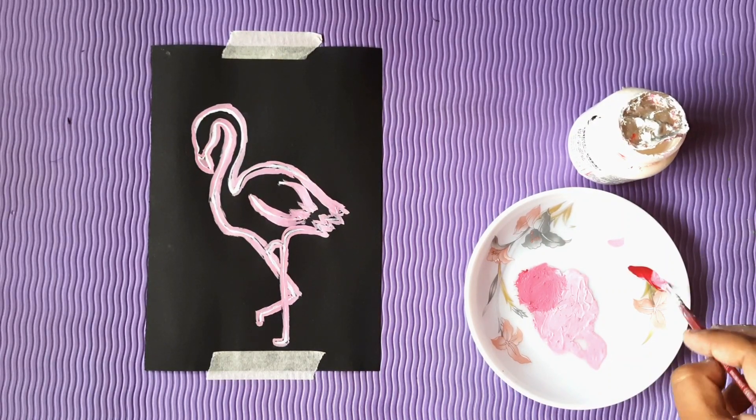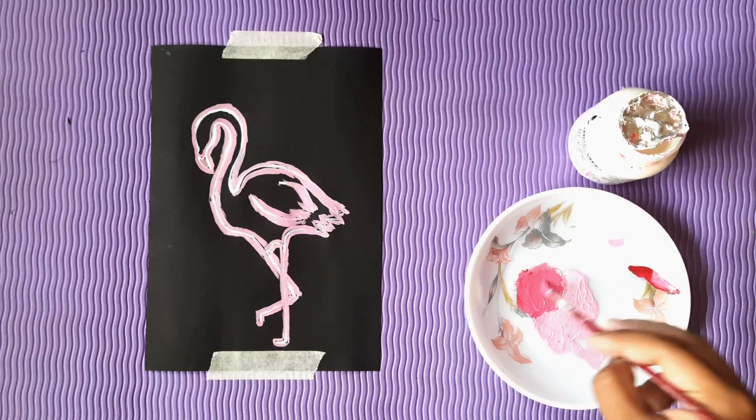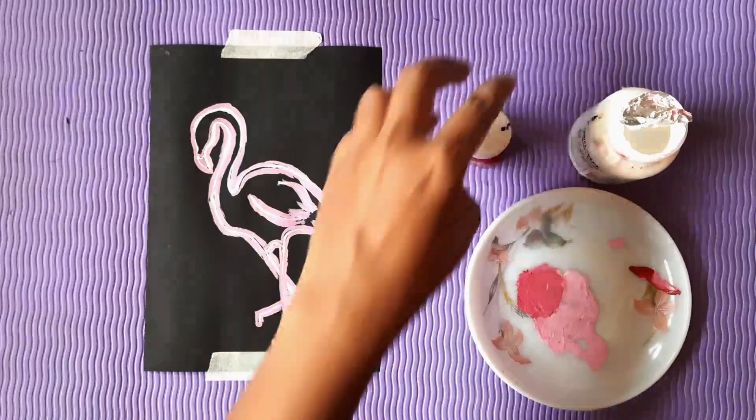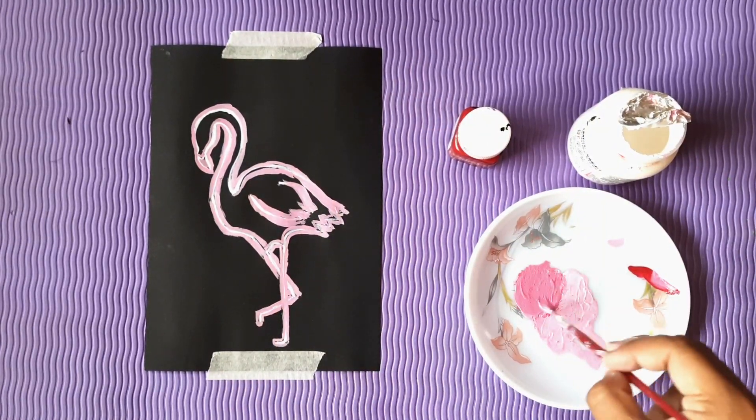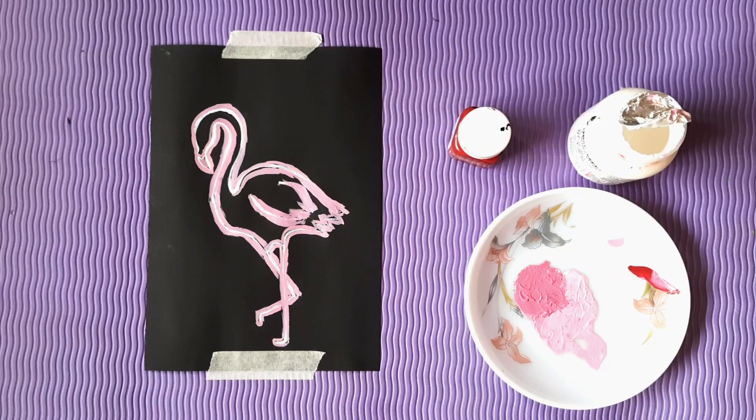Here I am done with the second border. Now I am adding a tint of crimson red to the previous color to make it a little more darker shade. And then I will repeat the process of outlining.